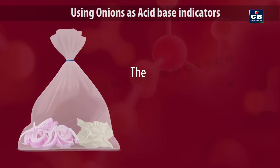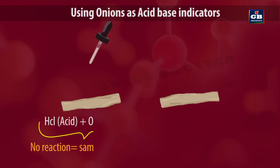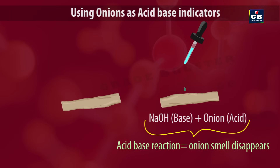Do you know why? The onion-treated cloth strips become acidic since the vapors from the onions are acidic. When this acidic cloth strip is treated with HCl, there is no reaction between HCl and the onion cloth. Whereas in the other strip treated with sodium hydroxide, there is an acid-base reaction between the sodium hydroxide and the onion-treated cloth strip. Here the neutralization reaction takes place, so the cloth strip loses its odor.